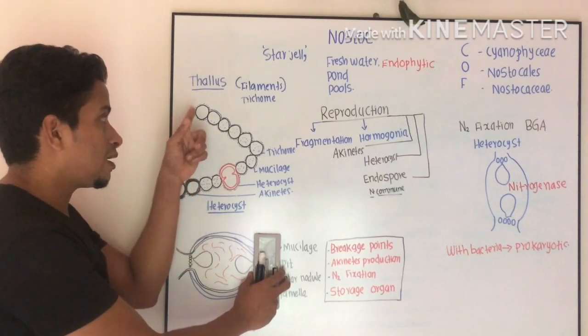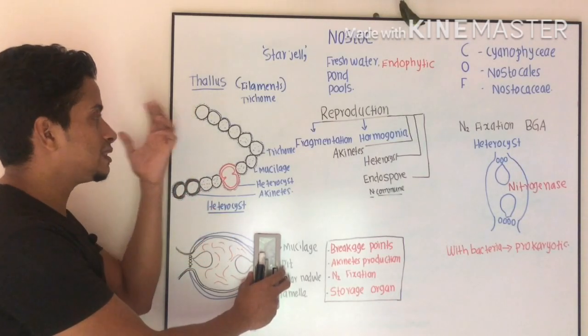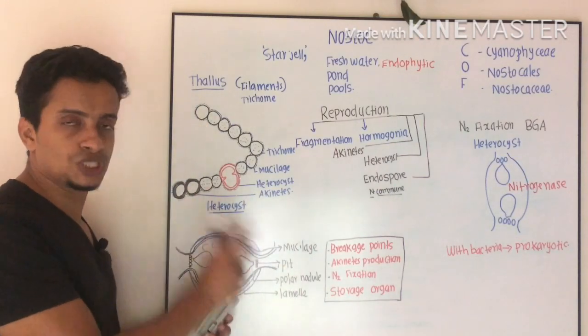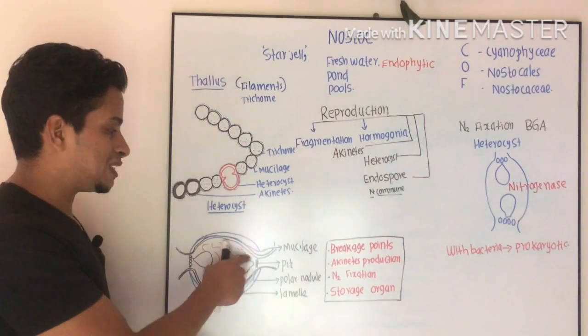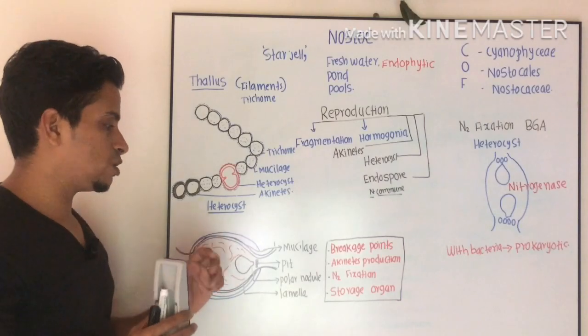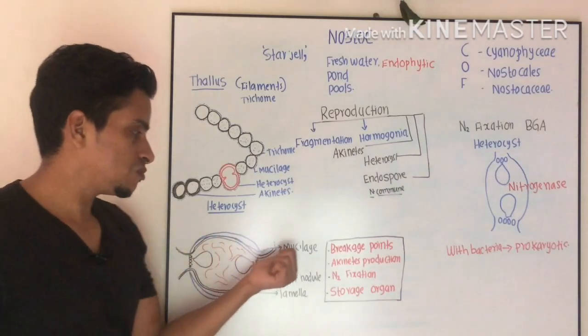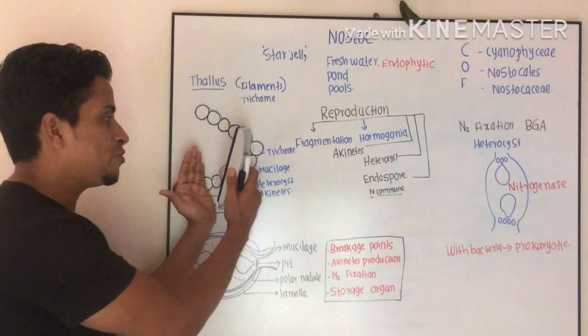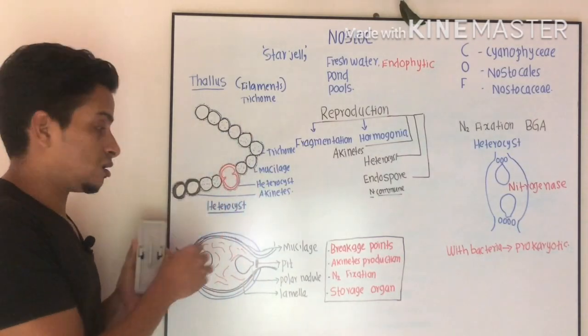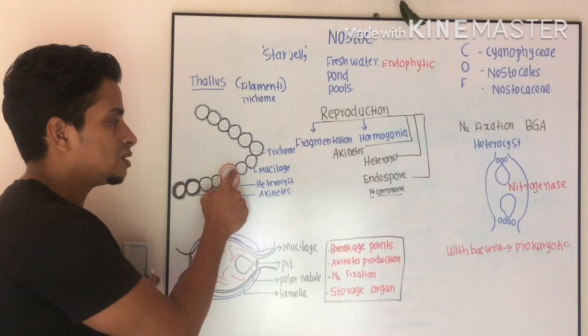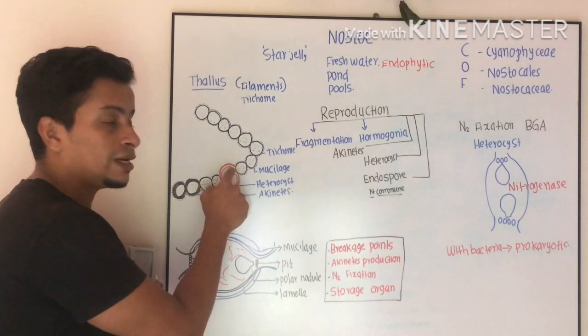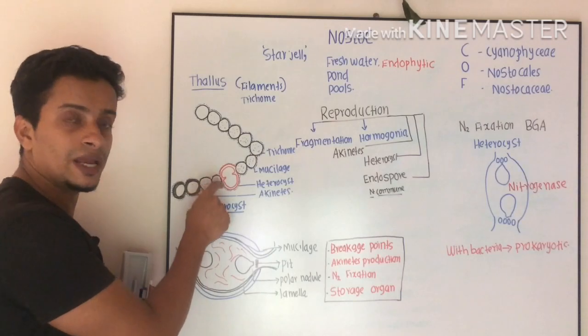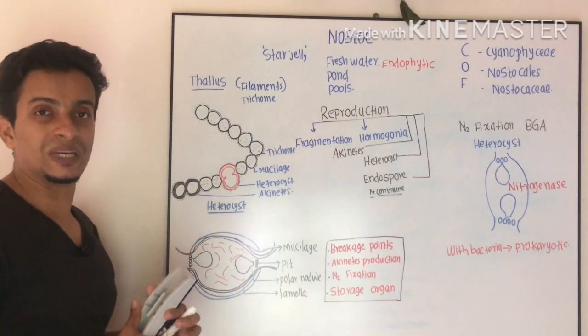In terminal position, the number of pits will be one. In intercalary position, the cell will have connection with adjacent cells by means of their pits - two pits connecting to both neighboring cells.